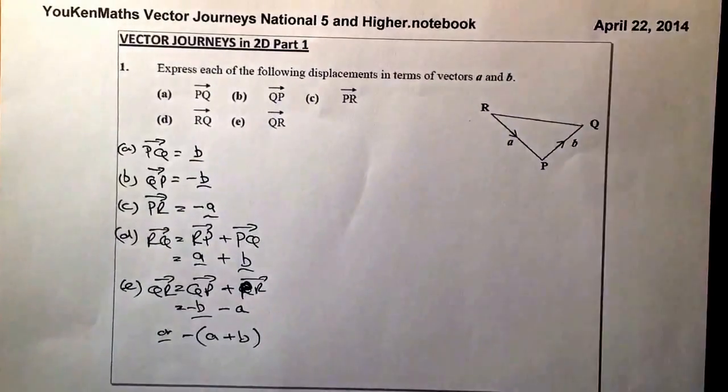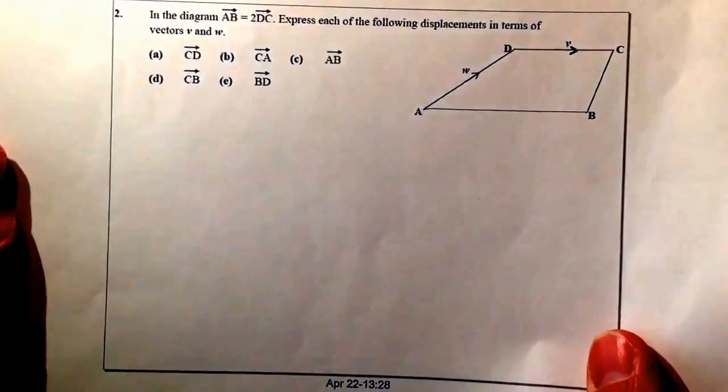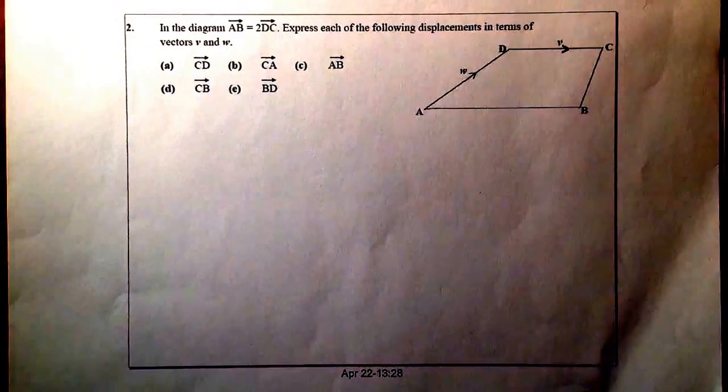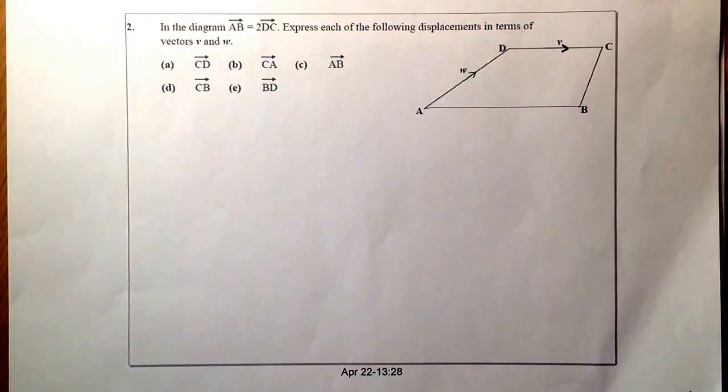Let's look at part two, question number two here. We've got an idea how to go ahead and look at vector journeys and vector diagrams here from the first question. So let's do the same with this one here, just a little bit different here.